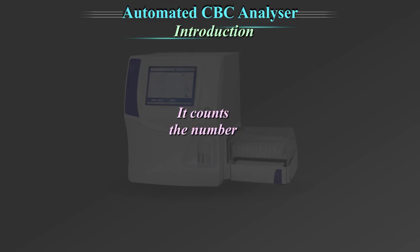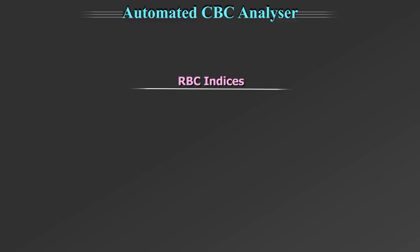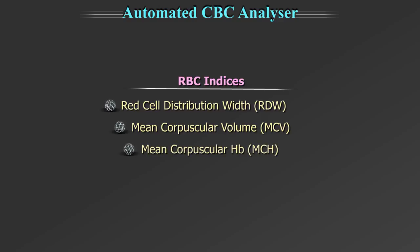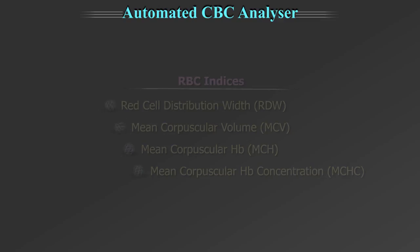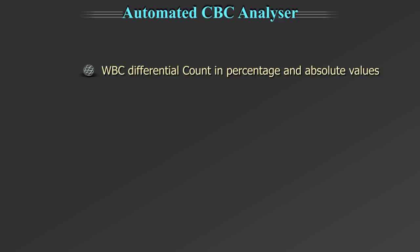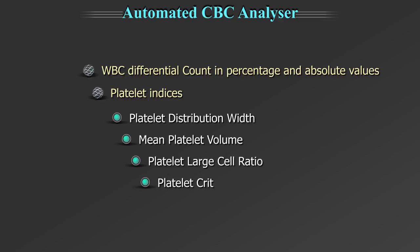It analyzes parameters like the red blood cell counts, white blood cell count, platelet counts, hemoglobin level, hematocrit levels, RBC indices like the red cell distribution width, mean corpuscular volume, mean corpuscular hemoglobin, mean corpuscular hemoglobin concentration, WBC differential count and absolute values, and platelet indices like the platelet distribution width and mean platelet volume.